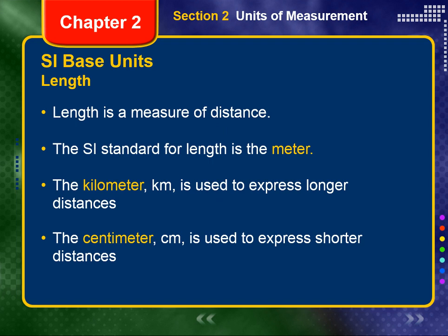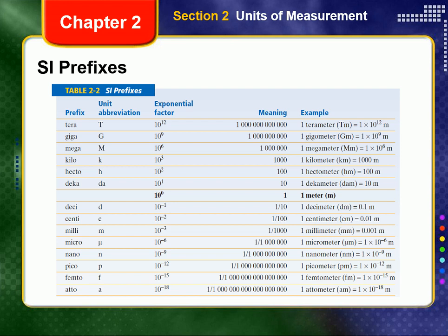The SI standard unit for length is the meter. A distance of one meter is about the width of the average doorway. To express longer distances, the kilometer, or km, is used. One kilometer equals one thousand meters. Road signs in the United States sometimes show distances in kilometers as well as miles. To express shorter distances, the centimeter is often used. From Table 2-2, one centimeter equals one one-hundredth of a meter. The width of your textbook is just over 20 centimeters.